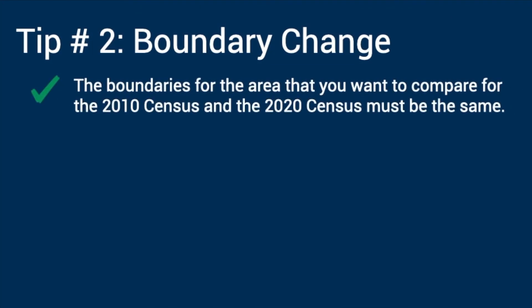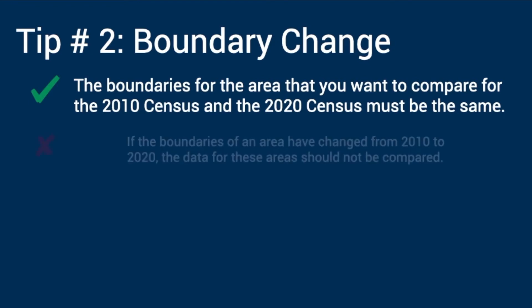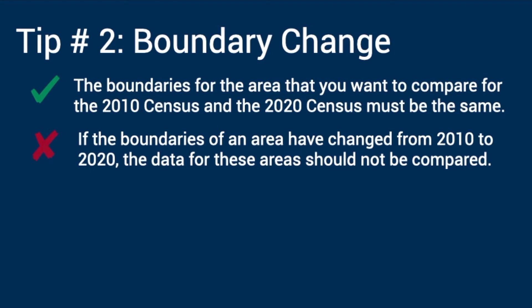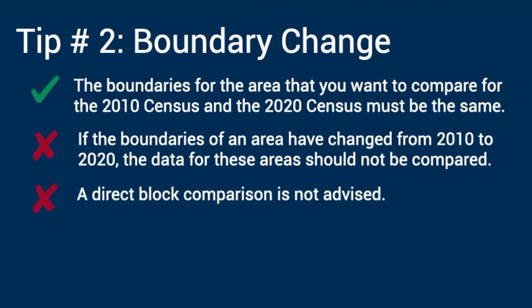Tip number two: be cautious about the geographic area that you select for your comparison. It is critical that the boundaries for your area for the 2010 census and the 2020 census are the same. If the boundaries have changed from 2010 to 2020, the data for these areas should not be compared. Every decade, the Census Bureau redesigns the boundaries of blocks. Therefore, a direct block comparison is not advised. In addition, in order to provide privacy within the data at the block level, the Census Bureau applies noise to the data.